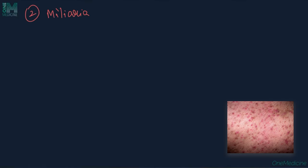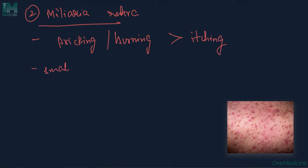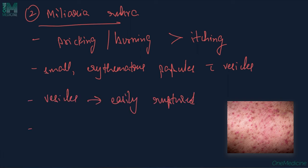Milaria rubra: Patients usually complain of prickling or burning sensation more than itching. Small erythematous papules often surmounted by vesicles are seen. The vesicles can be easily ruptured by flicking the lesion. Most commonly affected sites are the trunk, forehead, and extremities.